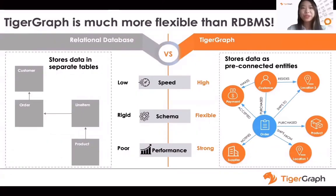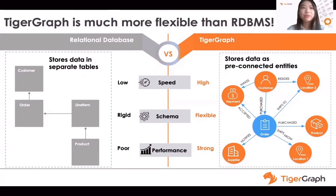Relational databases store data in separate tables, requiring time-consuming table joins to analyze relationships. TigerGraph stores data as pre-connected entities, so there is no need for table joins. In the left picture, in order to discover what products a customer bought, you need to write several join tables which significantly slows application performance. With data relationships at their center, TigerGraph is incredibly efficient when it comes to query speeds, even for deep and complex queries.